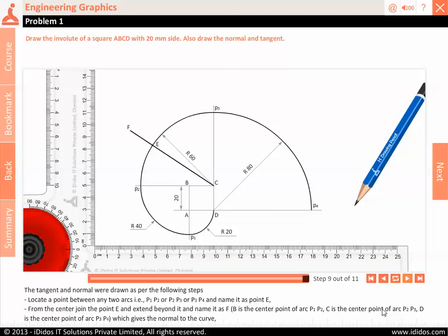B is the center point of arc P1, P2. C is the center point of arc P2, P3. D is the center point of arc P3, P4, which gives the normal to the curve.